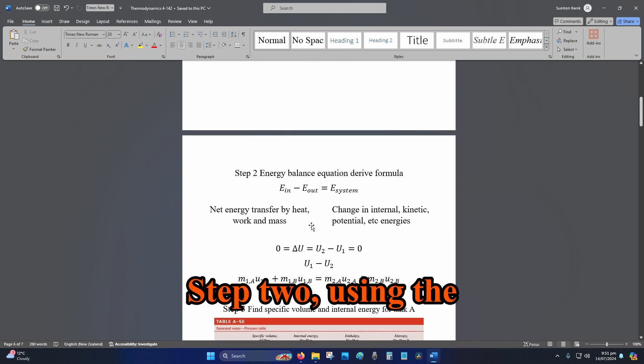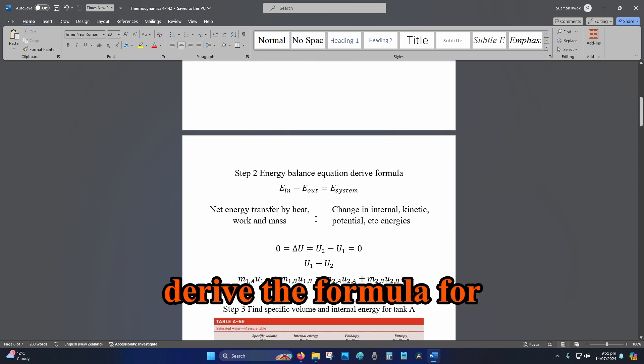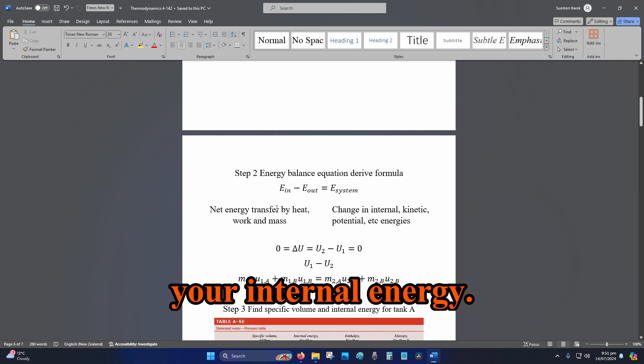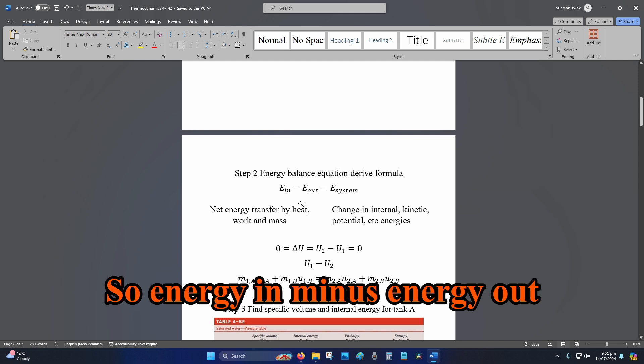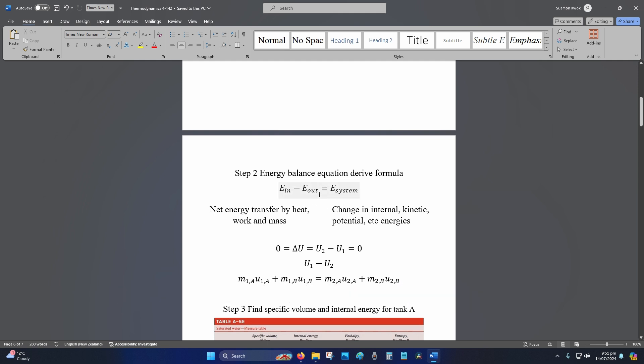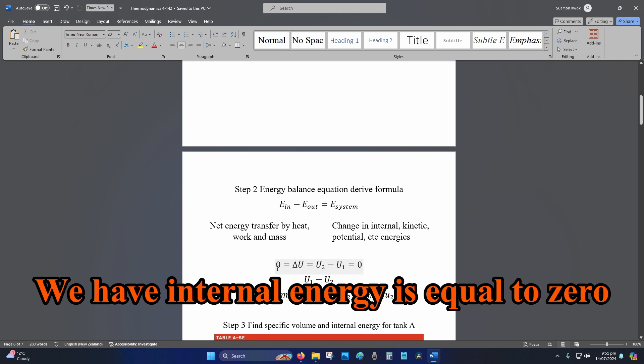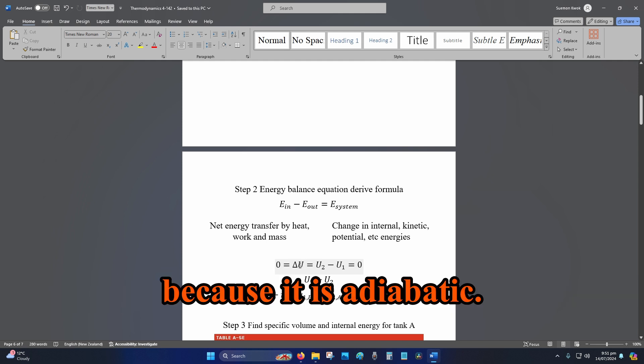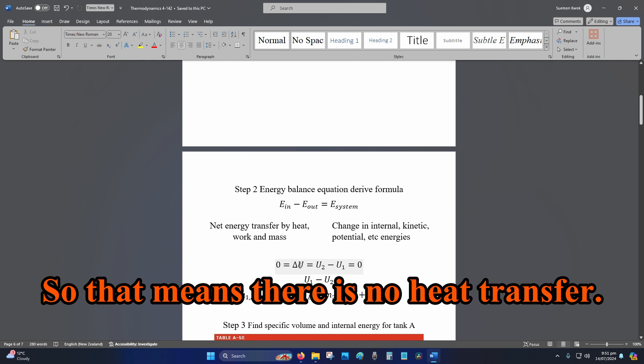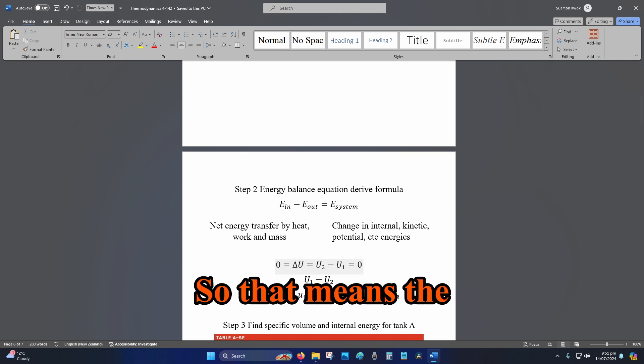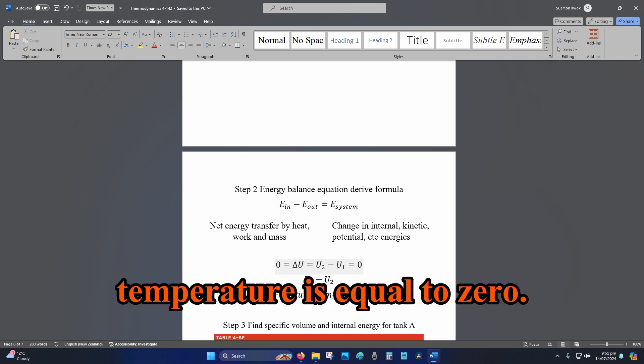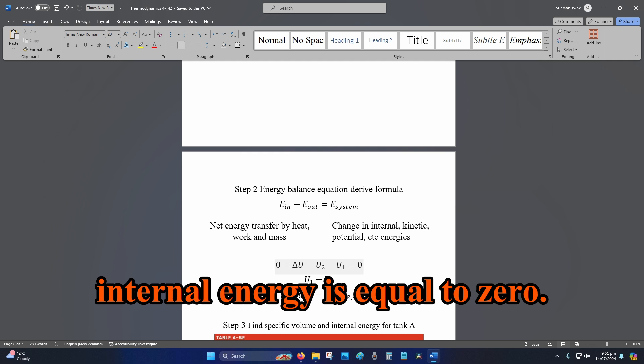Step 2, using the energy balance equation, derive the formula for your internal energy. So, energy in minus energy out is equal to energy of system. We have internal energy is equal to 0 because it is adiabatic, so that means there is no heat transfer. So that means the temperature is equal to 0, so that means the internal energy is equal to 0.